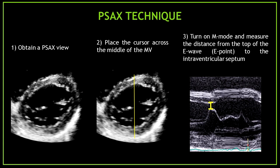Let's review the parasternal short axis technique to obtain the mitral valve E-point septal separation — three simple steps. Number one: obtain a parasternal short axis view at the mitral valve level. Number two: place the cursor across the middle of the mitral valve. Number three: turn on M-mode and measure the distance from the top of the E-wave, which is the E-point, to the septum.